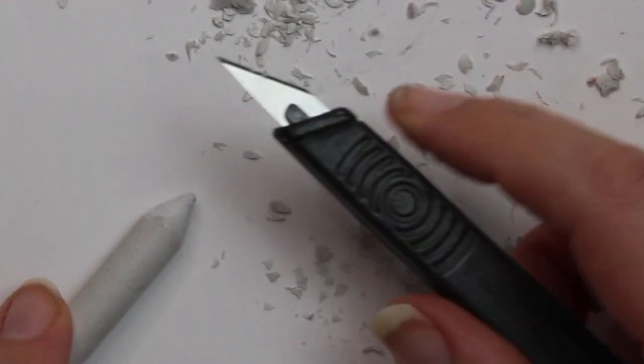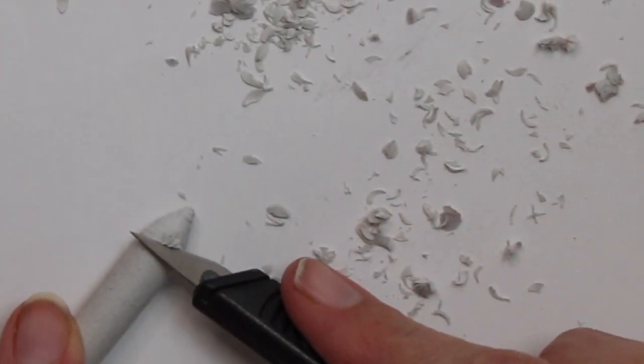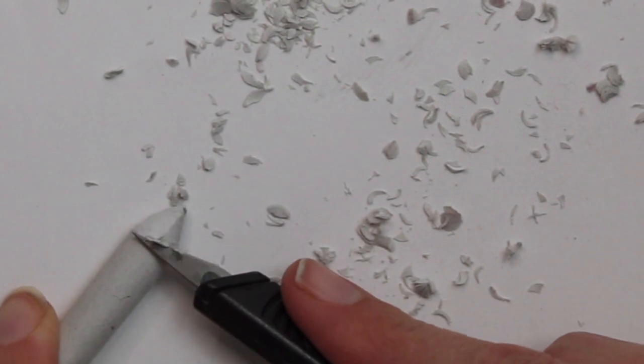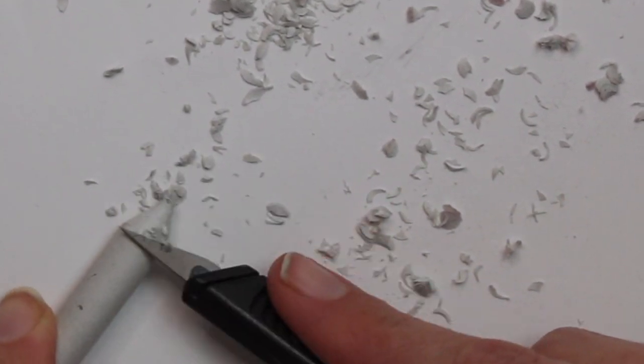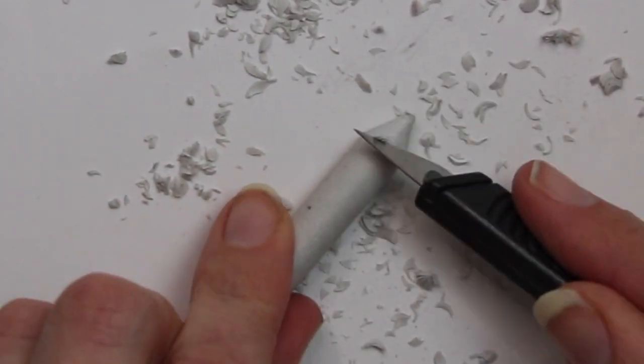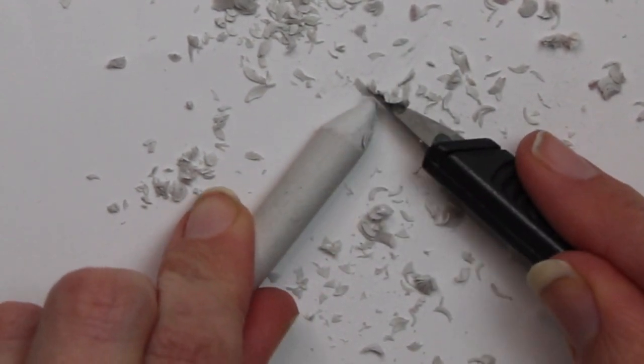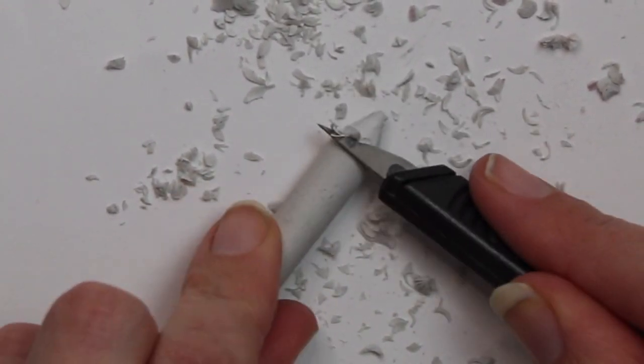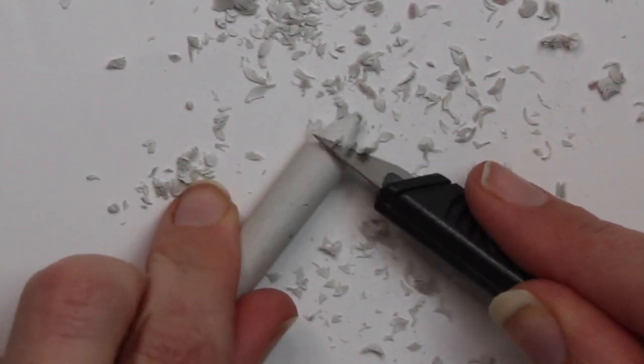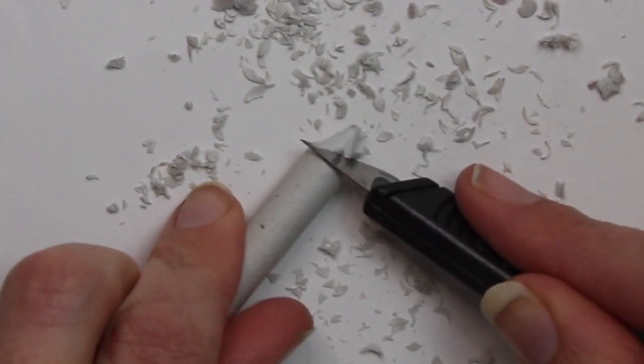I'm then at the end just going to bring it to the final point, making sure that my knife is really sharp, holding it steady on the table, and just bringing it to that final point there. So then when I finish this, my blending stump will be good to go.